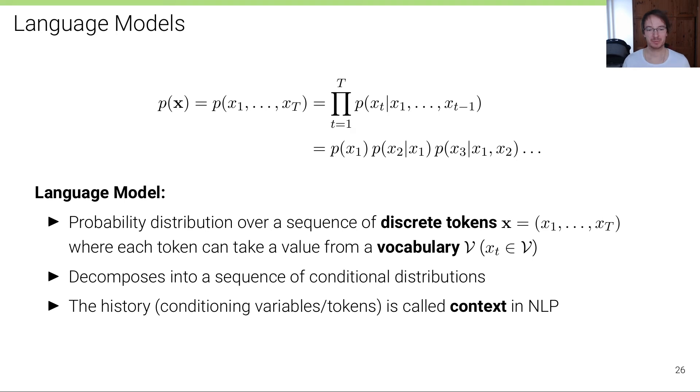A language model models a probability distribution over a sequence of discrete tokens, where each token can take a value from a vocabulary V. We decompose this language model into a sequence of conditional distributions. The context of any word is all the previous words all the way until the first word in that sequence. That's what's called context.